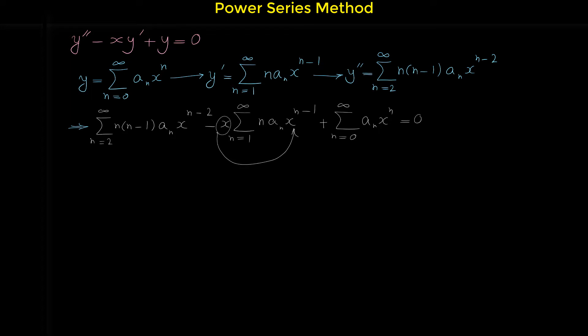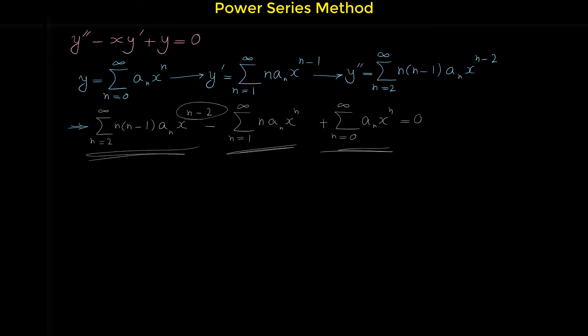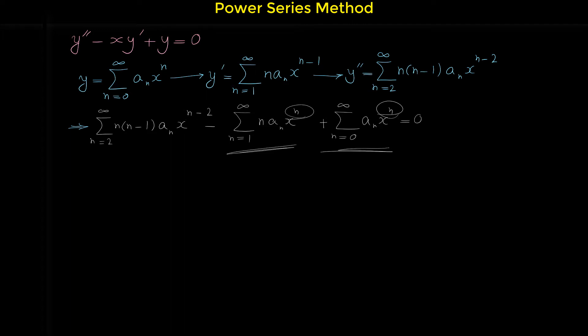Multiplying x by x to the n minus one gives x to the n. Now if you look at these power series, in the two terms from x times y prime and y, the power of x is n, but in the y double prime term the power of x is n minus two. So we have to make the power of x the same across all series, and we can do this by shifting the index.